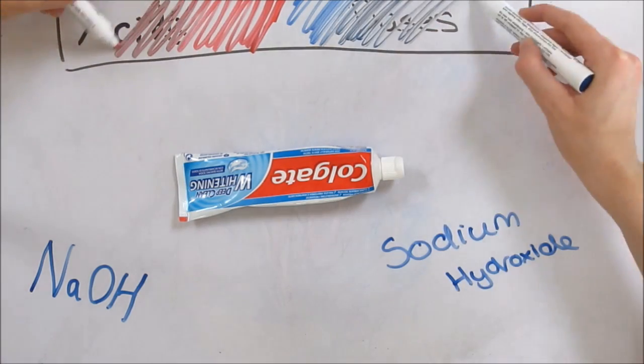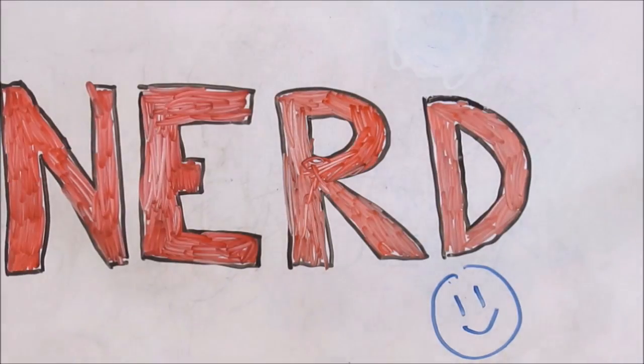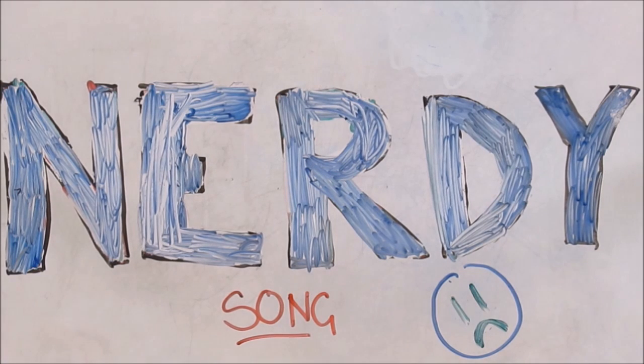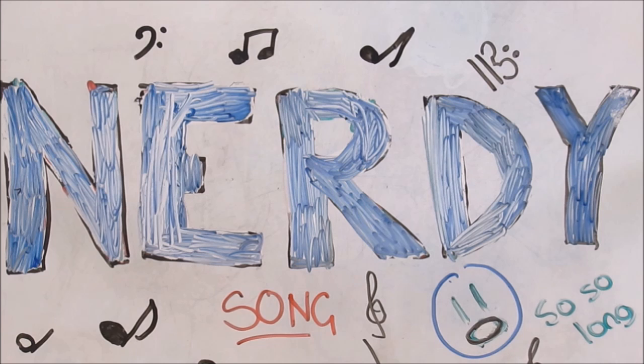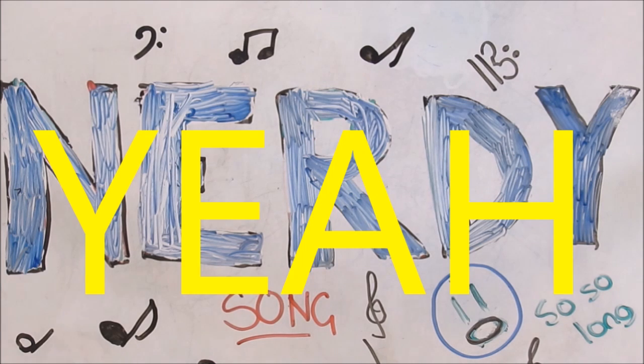If you wanna know, if you wanna know where on the pH scale a substance goes, drop in an indicator and see if the colors change, so you'll know if it's an acid, neutral, or a base.